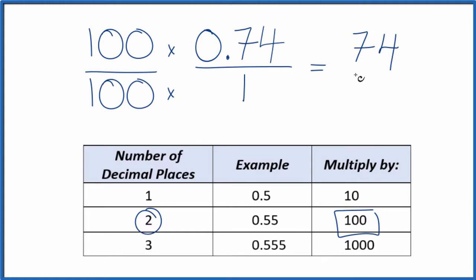So 100 times 1, that is 100. And we end up with 74 over 100. So this is a fraction form of the decimal, 0.74.